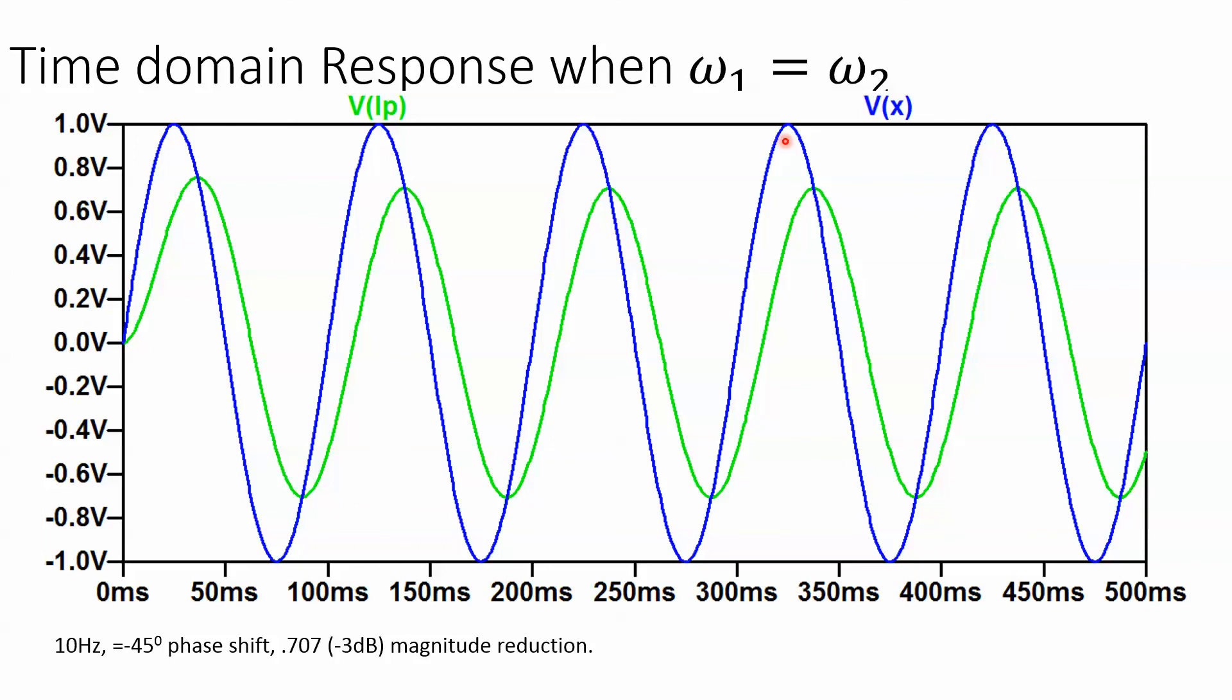Then when we have the time domain response, when the frequencies are equal, you can see the gain is reduced. And we're getting about 0.707 compared to the input. And we look at the phase. There's a delay, which would be minus 45. Now notice there is this weird shape right here that doesn't look just like a sine wave. We'll talk about that later.